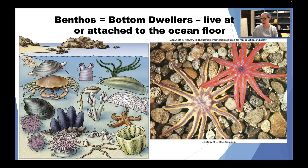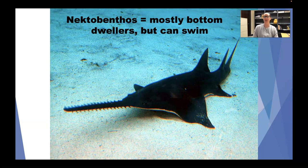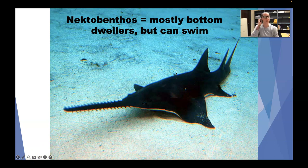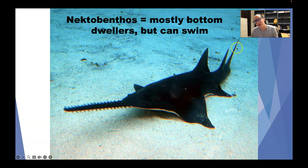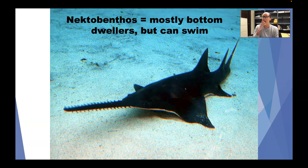We also have nektobenthos — mostly bottom dwellers that can actually swim horizontally as well. A good example shown here is the sawfish, named because the top of its rostrum looks like a chainsaw. It also has three dorsal fins, which is really unusual. Other common nektobenthos include halibut and other flat fish that live on the bottom with eyes on one side of their body.